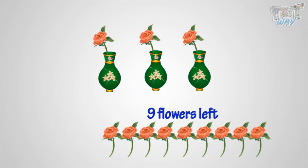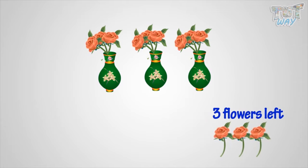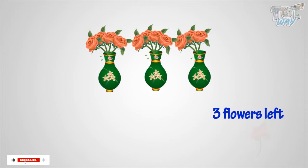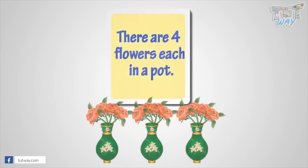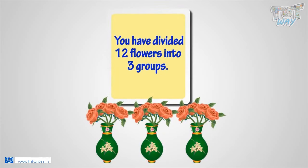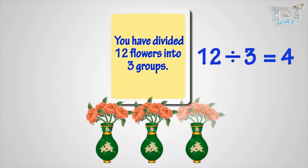Put one flower each in a pot. Flowers left. Now add one more in each flower pot. Flowers left. Now add one more in each pot. Flowers left. Now add one more in each pot. No flower left now. So, there are four flowers each in a pot.